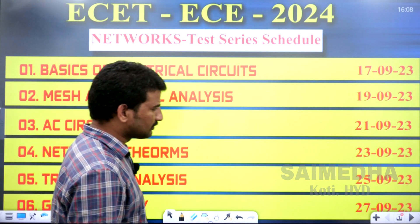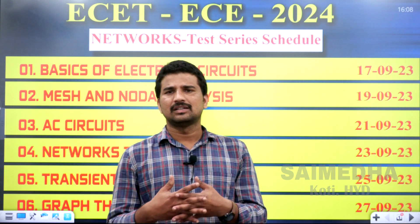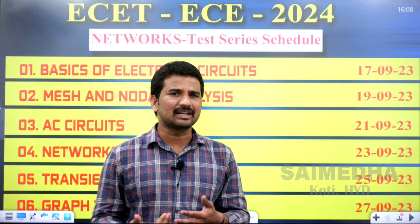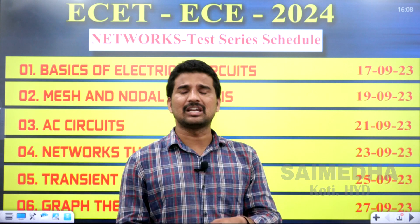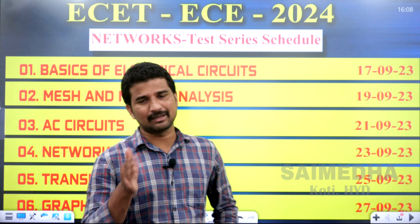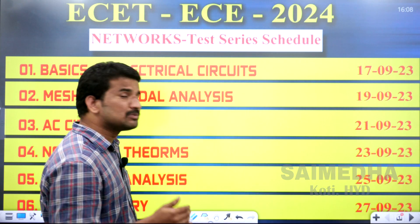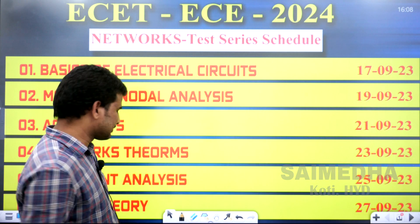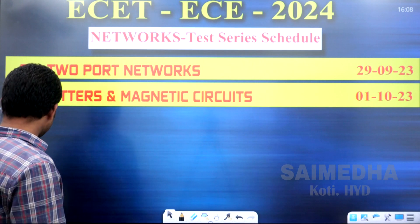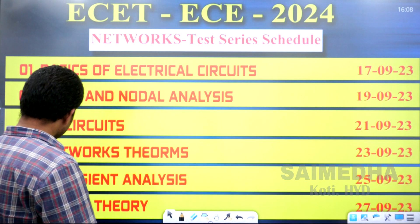Next is graph theory. We are going to look at the tree, tree-load, twigs, limbs, ties, and matrices. We will look at the number of twigs, number of links, number of loops, and limbs. That is graph theory, and the graph theory exam is going to be on the 27th of September.